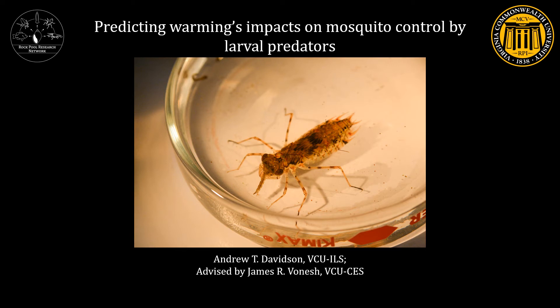We've heard a little bit about rock pool research this morning, and that theme will continue with my presentation, but we're going to shift gears to talk more about some of the organisms that inhabit rock pools — specifically mosquito larvae — and some research we've been working on examining how global warming might affect their interactions with other species, like the predatory dragonfly larvae you see right here.